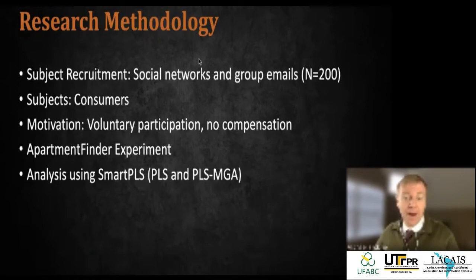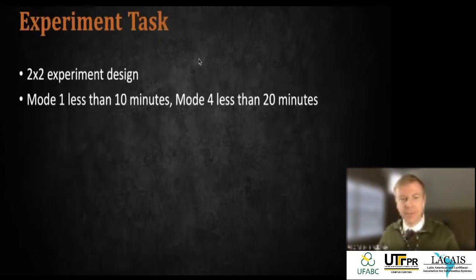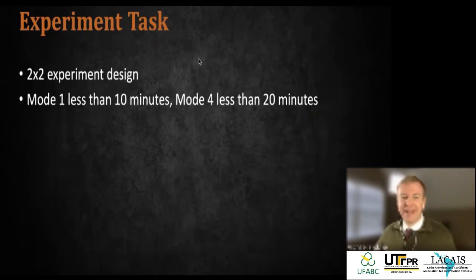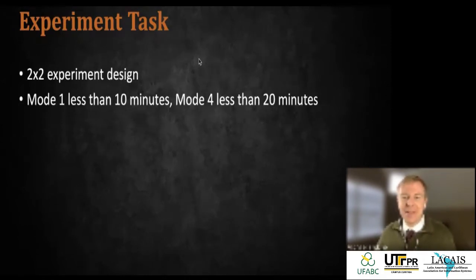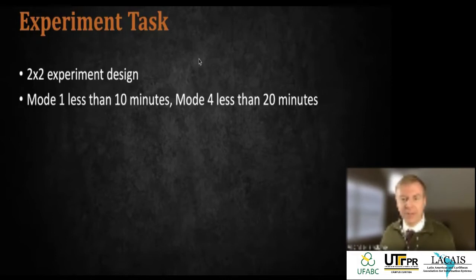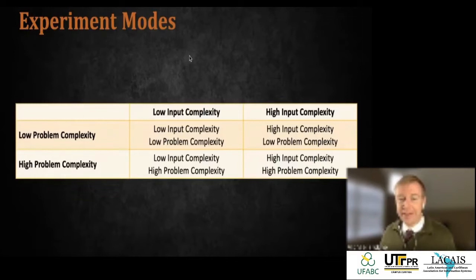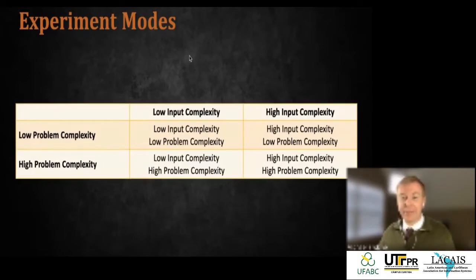For the research project, we recruited using social networks and group emails. Our sample size was 200, mostly students acting as consumers — voluntary, with no monetary compensation. They completed the apartment finder experiment, and almost all analysis was done using SmartPLS, a structural equation modeling package from Germany. We used a multi-group analysis tool to compare the model across groups to see if there were any differences.